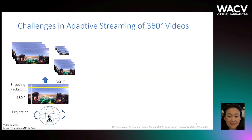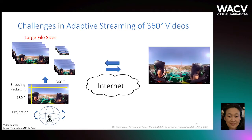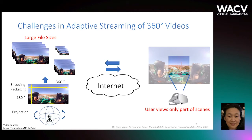In 360-degree videos, the amount of video data is an order of magnitude larger than conventional video to achieve similar quality. When it is delivered through the conventional video streaming framework, a user views only a small portion, and much of the network bandwidth is used up by the content that is not actually viewed.